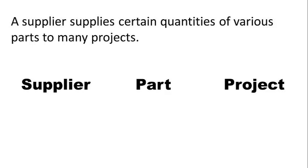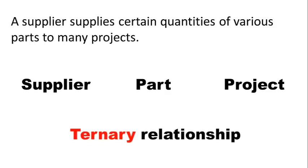This sentence says a supplier supplies certain quantities of various parts to many projects. Notice that this relationship connects three entity types in the same breath. It's very different from saying a supplier supplies many parts — that is not the same as supplier supplies parts to projects. When you say supplier supplies many parts, you can ask: to which project? If you take a particular shipment, it's not enough to say supplier A is supplying part B — to which project? They may be supplying part B to project 1 or project 2; those are completely two different shipments. So in order to get the full picture, you need to have the values of all three entity types.